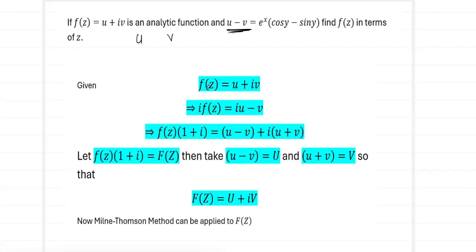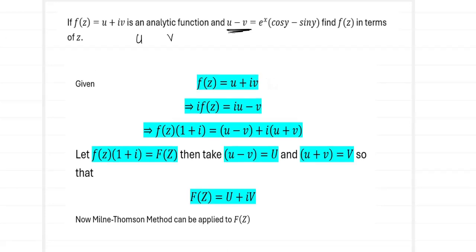We start with f(z) = u + iv. Multiplying by i gives i·f(z) = iu + i²v = iu - v. Now adding f(z) and i·f(z), the left side gives f(z)(1 + i). On the right side, the real part becomes u - v and the imaginary part becomes u + v, giving us f(z)(1 + i) = (u - v) + i(u + v).